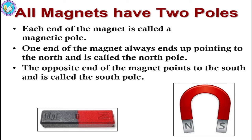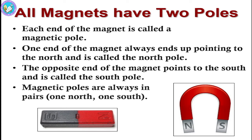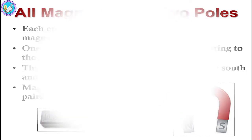The opposite side of the magnet points to the south, which is called the south pole. The magnetic poles always come in pairs, like one north and one south. There cannot be two north or two south poles — it always has opposite poles, which are north and south.